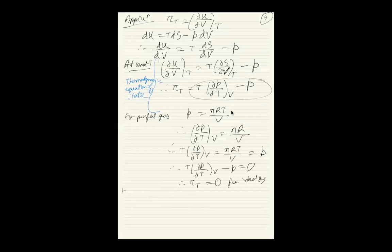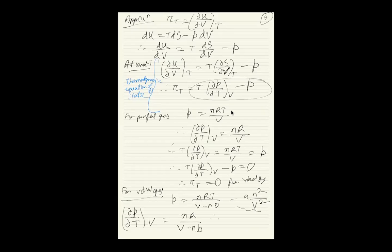For a van der Waals gas, P = nRT/(V - nb) - an²/V². The term an²/V² has no temperature dependence, so (∂P/∂T)_V = nR/(V - nb). Therefore π_T = nRT/(V - nb) - P = an²/V². The internal pressure for a van der Waals gas is an²/V² — this term comes from attractive forces between molecules. That's what you're seeing over here.